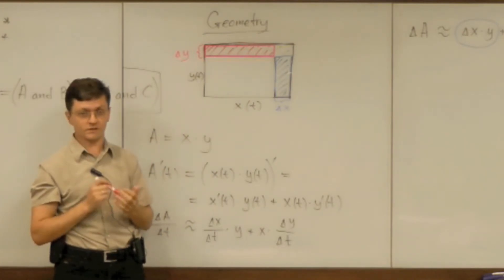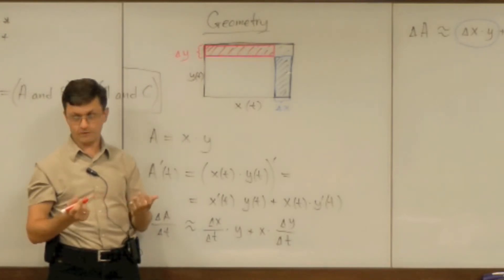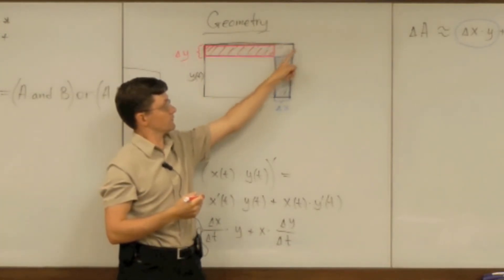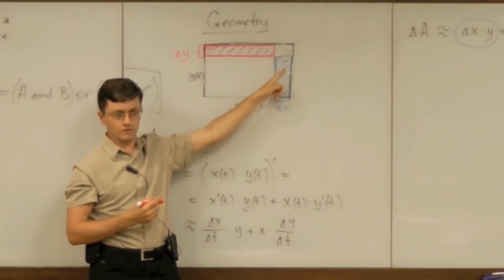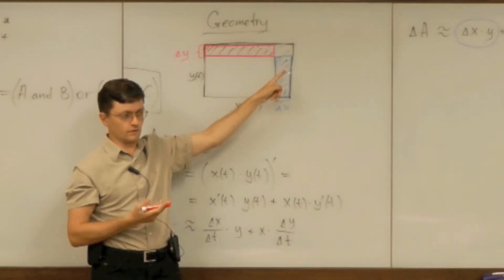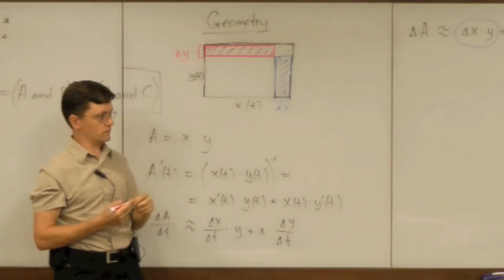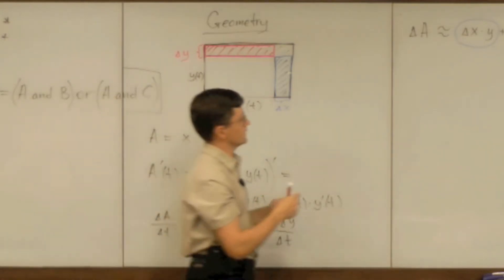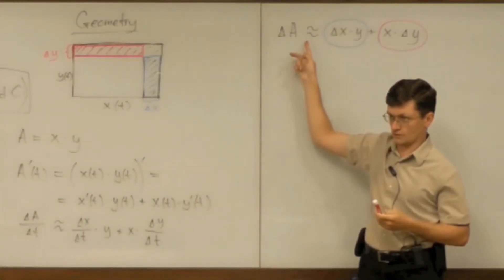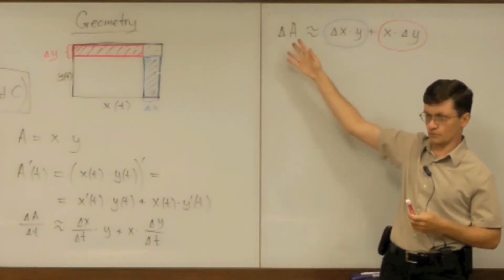Now is it ever exact? Never. Never because we always have that remaining rectangle. So that's exactly why that equality is never equality, it is always approximate equality.